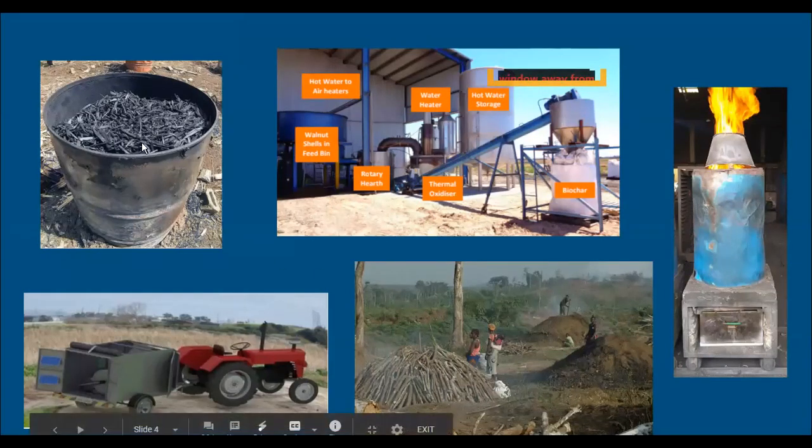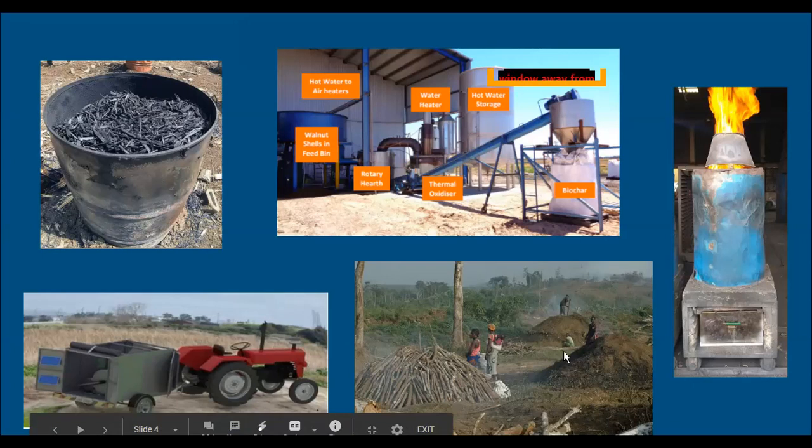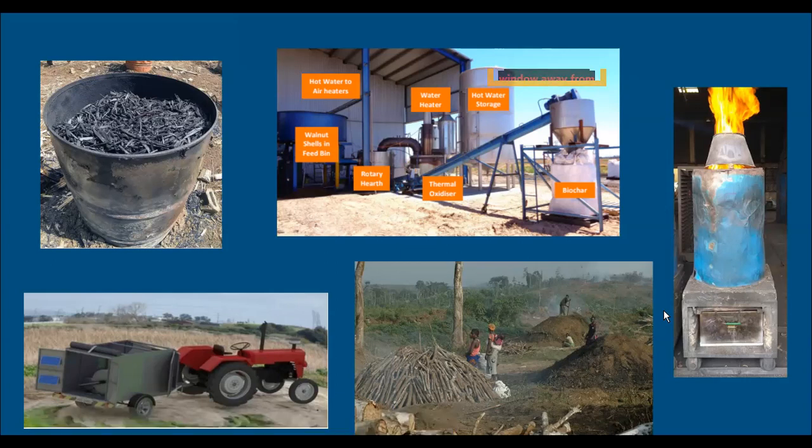The traditional way of carbonizing is in earthen pits. So, in general, the idea here is we're trying to limit the amount of oxygen. We'll talk a little bit about that later. So, you can use a drum, you can use an earthen pit, you can use some more sophisticated designs. But they all are basically trying to achieve the same end and trying to maximize the quantity of char produced in the end.